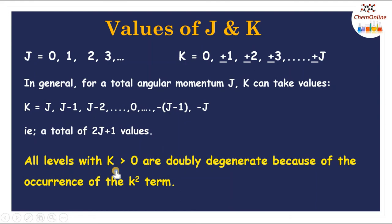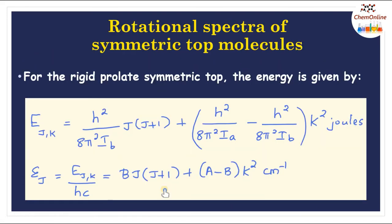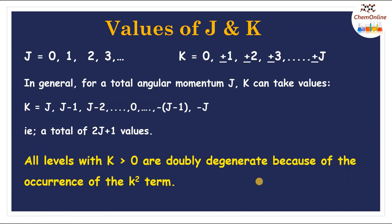All levels with K > 0 are doubly degenerate because of the K² term in the energy equation. Since energy depends on K², it is immaterial whether the symmetric top molecule spins clockwise or anticlockwise — the energy will be the same for a given angular momentum. So for all levels with K > 0, those rotational levels are doubly degenerate.